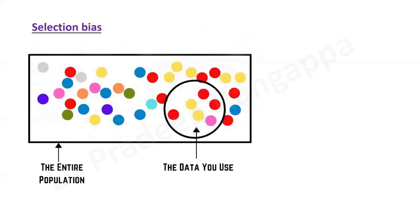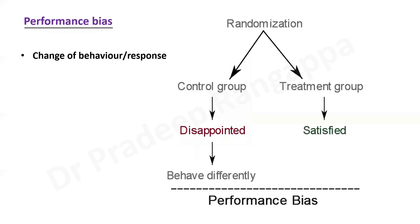Selection bias is shown pictorially here. The whole population is represented, but the sample taken has certain specific characteristics — meaning it is not representative of the entire population. There has been bias in identifying only a certain section of the population. The data is drawn from one section rather than the whole. This is called selection bias.